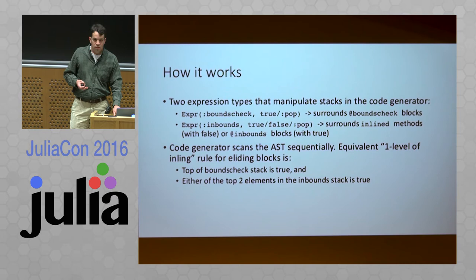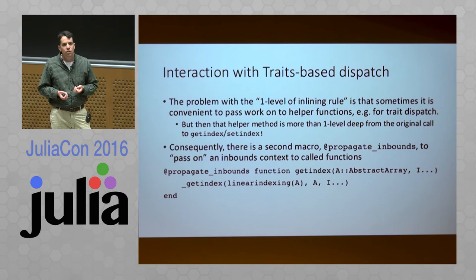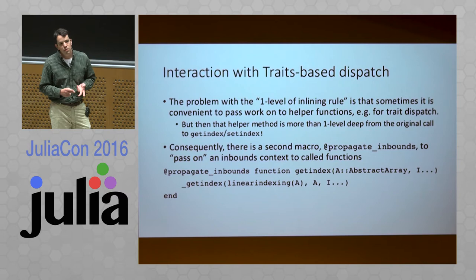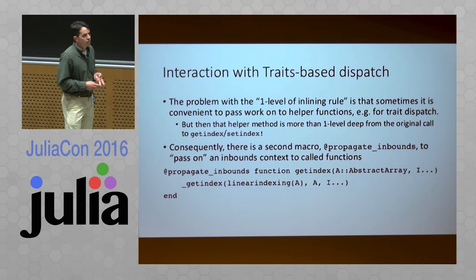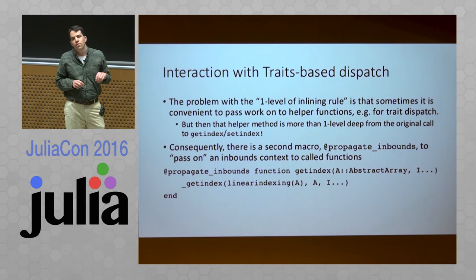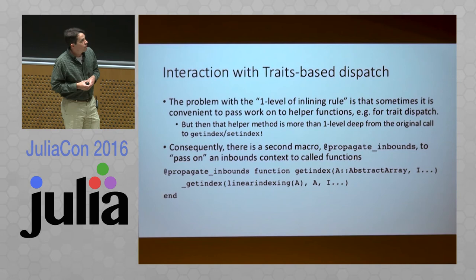When we went to use this new feature to rewrite the abstract array interface in base, we discovered a problem with the one-level-of-inlining rule — it conflicted with the way we wanted to write our code. The abstract array code leans very heavily on dispatch to specialize to particular methods: we specialize on traits of different array types such as fast or slow linear indexing, and on the types of the indexer such as range, integer, or real. The implementer of a particular getindex or setindex method can actually be very far away in the call graph from where you want to mark it as inbounds.